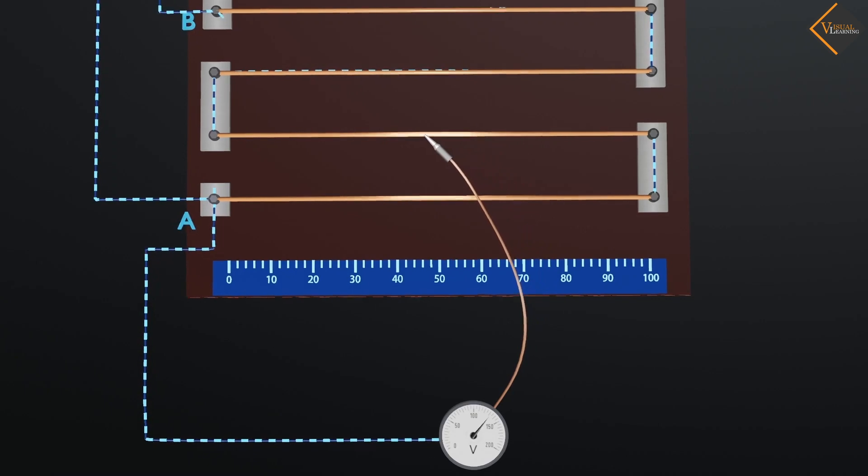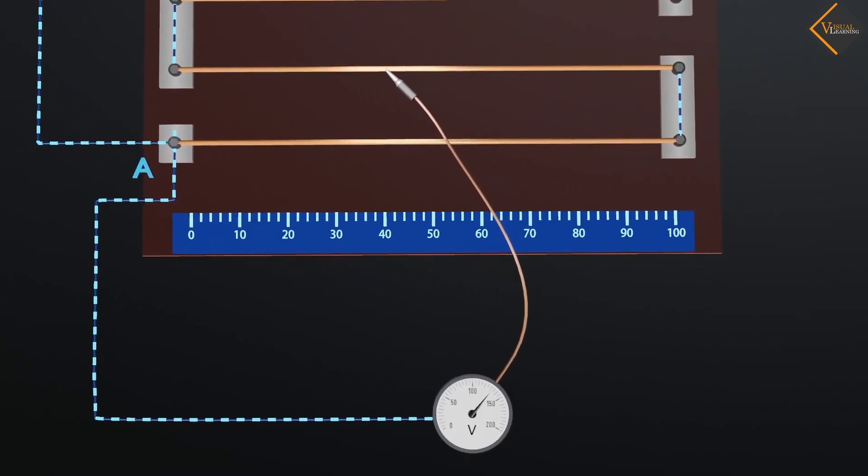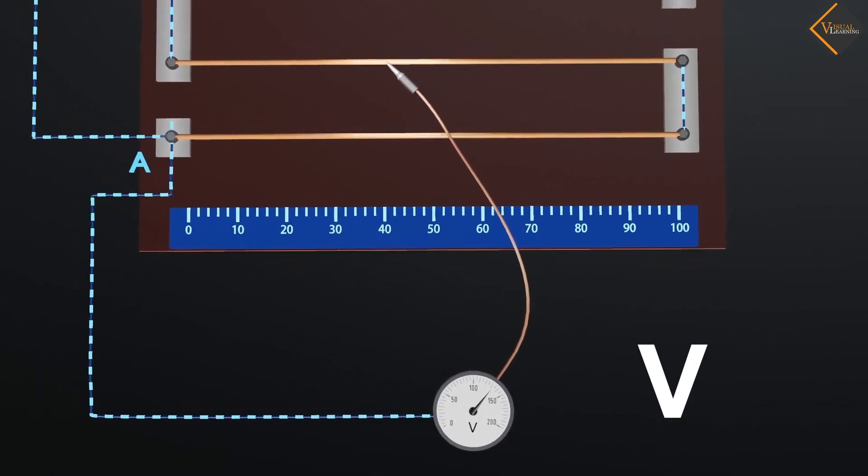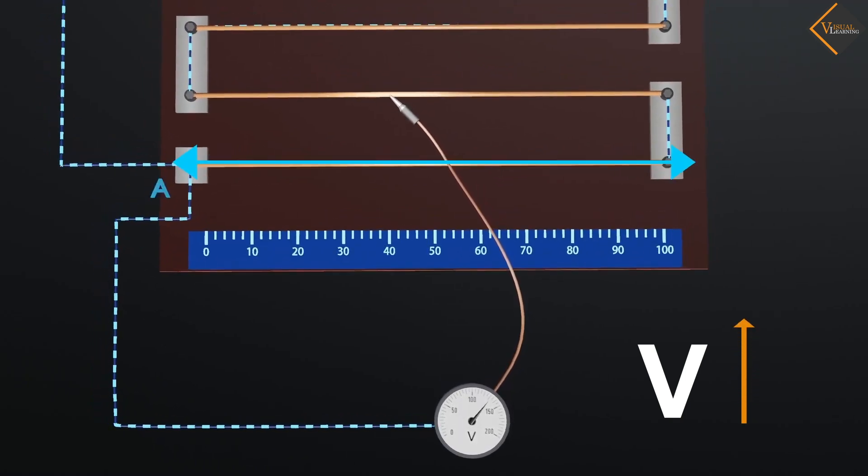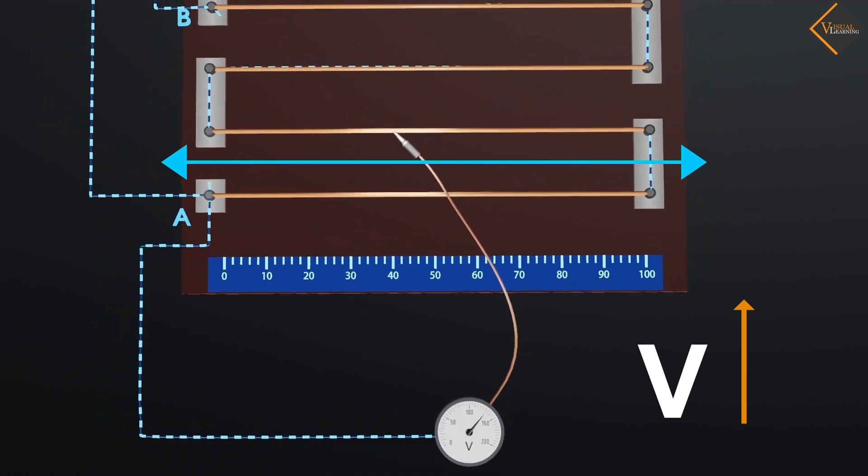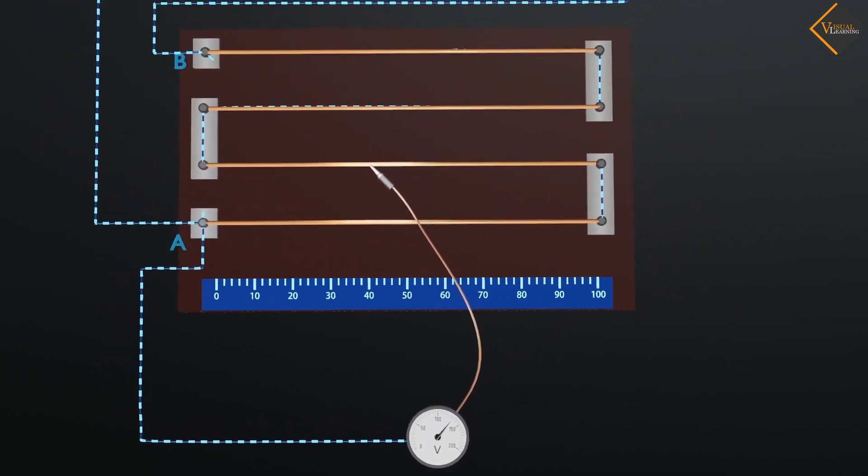We see that as we move the jockey towards point B, the reading of the voltmeter starts increasing. This tells us that when we move the jockey to point B, the potential of the wire depends on the length of the wire.